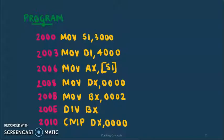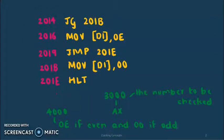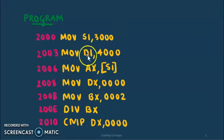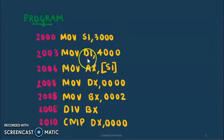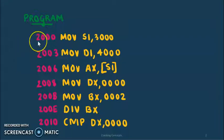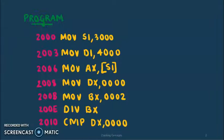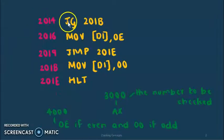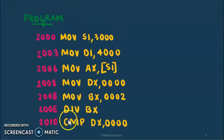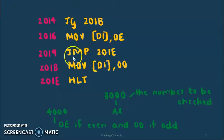Now here we'll see the first program to check whether the number is odd or even. All the numbers given in pink are the addresses where the lines of code would be stored. The registers used here are SI, DI, AX, DX, and BX. The instructions used here are move, divide, compare, jump-if-greater-than, normal jump, and finally halt.